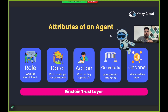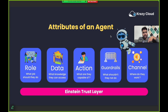The third attribute is action — after completing tasks, what actions can that AI agent perform, what are they capable of? That defines action. The fourth is guardrails. Guardrails is the boundary of that agent — it cannot go beyond that boundary.